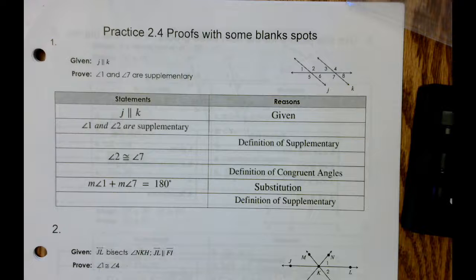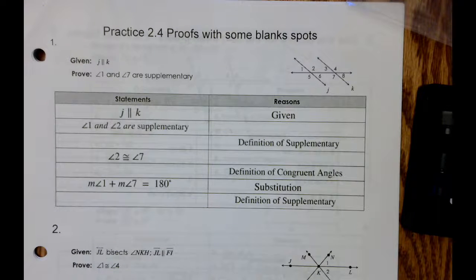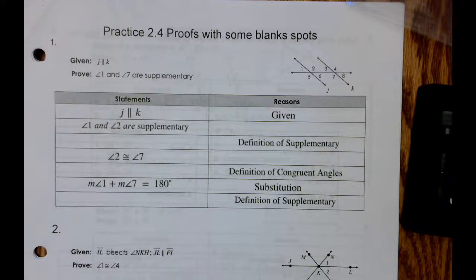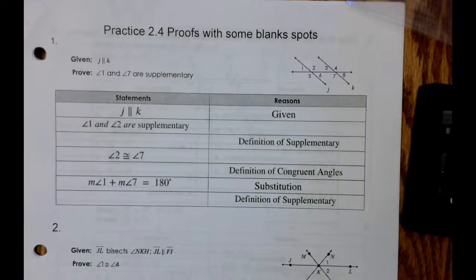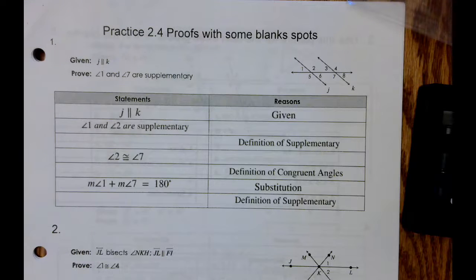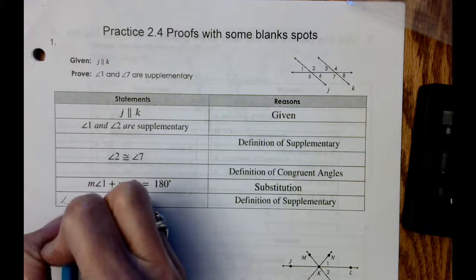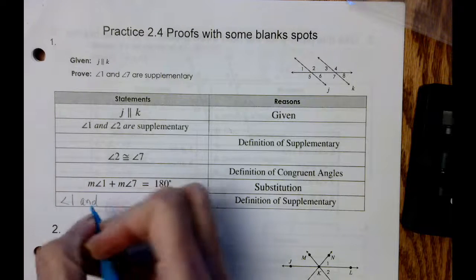We're going to take a look at Practice 2.4 — proofs with some blank spots that we need to fill in. I encourage you to keep returning to page 14, and there are some good reasons on page 13 as well. We are given that j is parallel to k, and we're going to try to prove that angle one and angle seven are supplementary. Let's go ahead and fill that in right now.